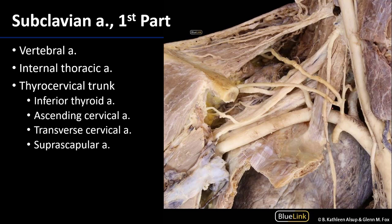The first part of the subclavian artery — everything medial to the medial edge of the anterior scalene muscle — has three major branches. The first is the vertebral artery, a large branch heading superiorly and medially toward the transverse foramina of cervical vertebrae C6 through C1, where it is protected by bone. The vertebral artery sends off branches to the spinal cord and meninges, then passes through the foramen magnum of the skull to meet its counterpart and form the basilar artery, supplying the posterior portions of the brain with blood.